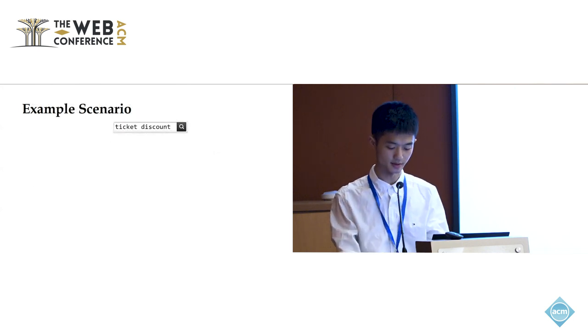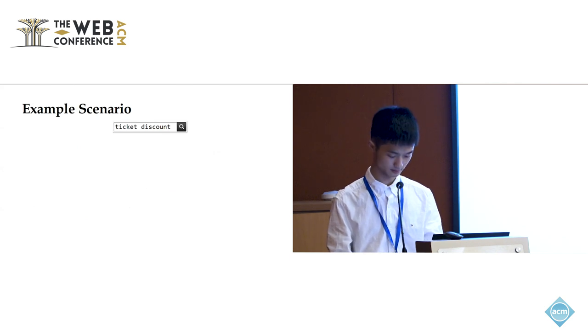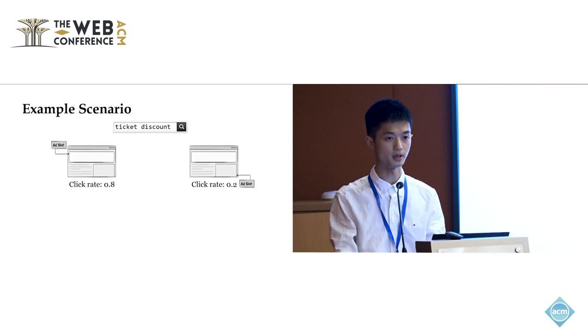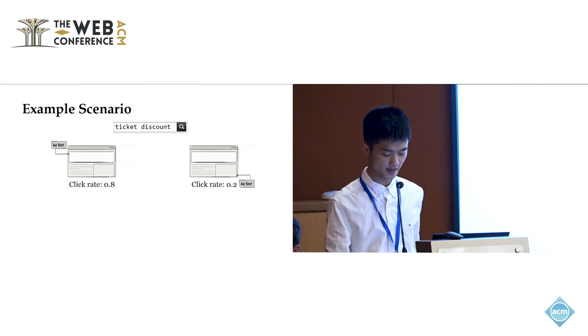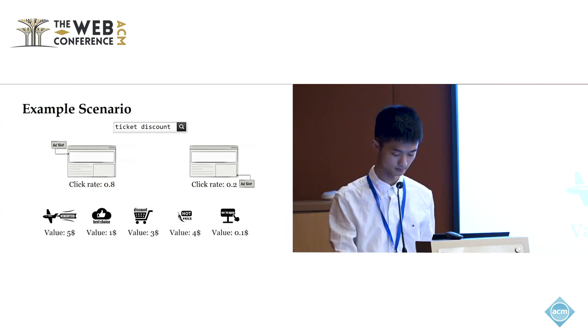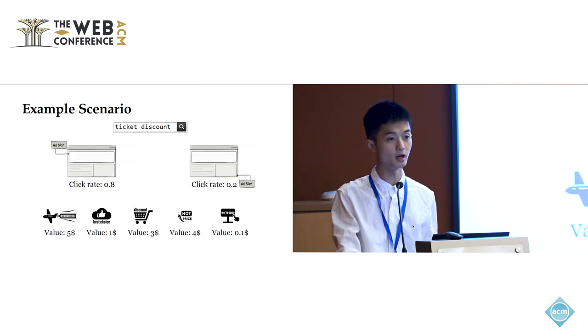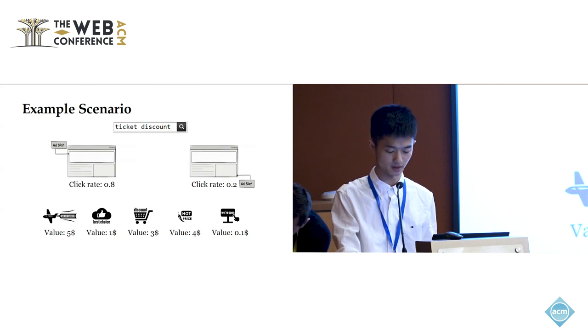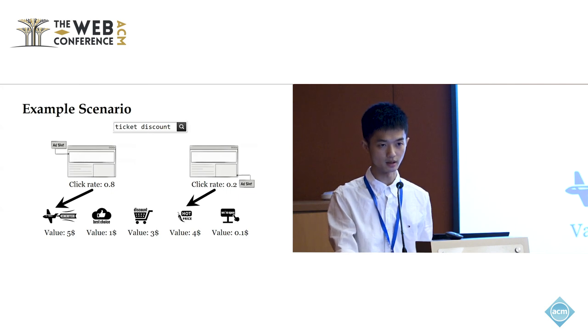To illustrate the problem, let us consider a concrete example. Suppose we as users have entered something into a search engine, say ticket discount. In a few seconds, the search engine will display a web page to us, possibly together with some ads. In this example, let us assume there are two ad slots for this search. One is placed at the top of the page such that the click-through rate for this position is 0.8, while the other is placed on the side, so the click-through rate for this position is lower, say 0.2. There are five advertisers interested in displaying an ad in our search. Their potential valuations for being clicked are $5, $1, $3, $4, and $0.1 respectively.